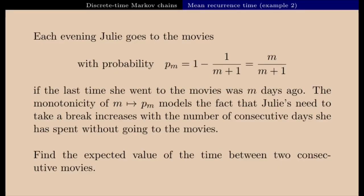Hi everyone, welcome back to my videos on discrete time Markov chains. In this video I'm going to do the same as in the previous one: give you one more example of application to show how we can in practice compute the mean recurrence time, prove that a discrete time Markov chain is positive recurrent, and how to find the stationary distribution if the Markov chain is positive recurrent. Here is the example we are going to look at.